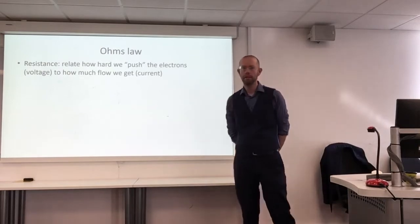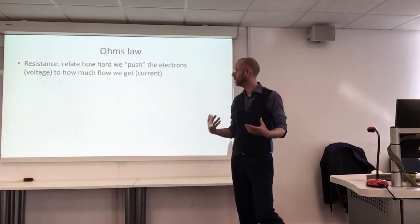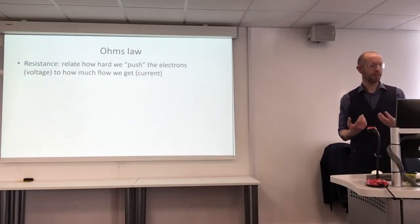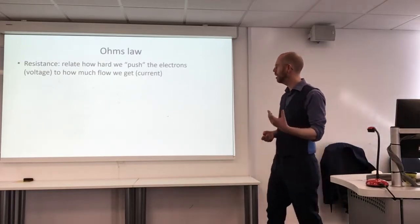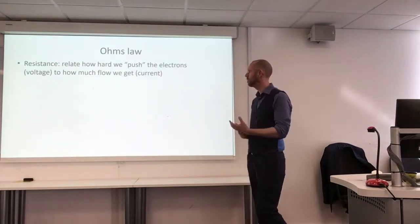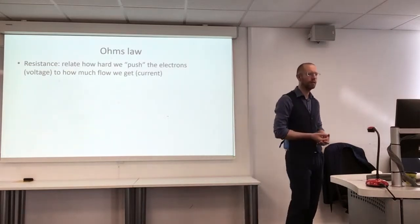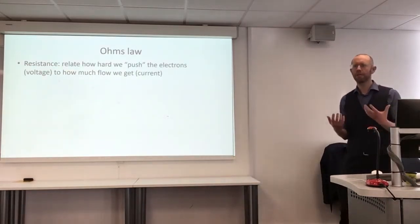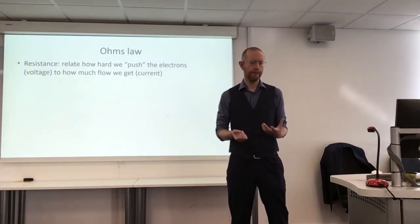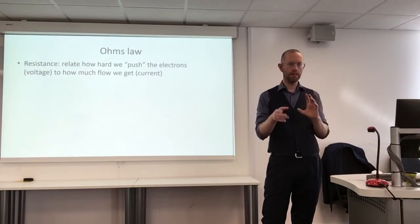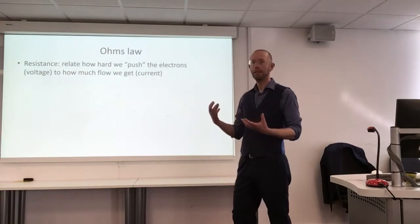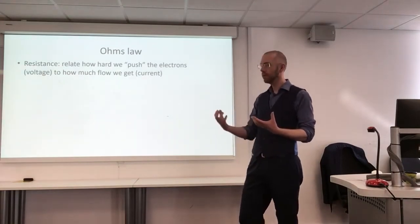We looked at resistance earlier and said that a good way of thinking about what resistance is, is to relate how hard we're pushing electrons around the circuit — which is the voltage — to how much flow we get. If we want to quantify this thing we call resistance, a quite intuitive way is to take how hard we're pushing the charge carriers around the circuit and divide by the flow rate that we get.